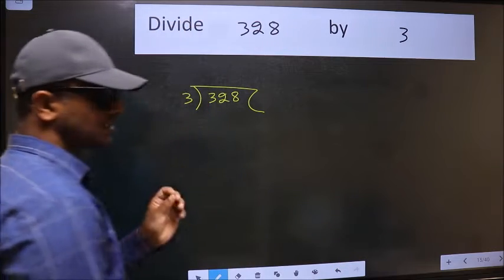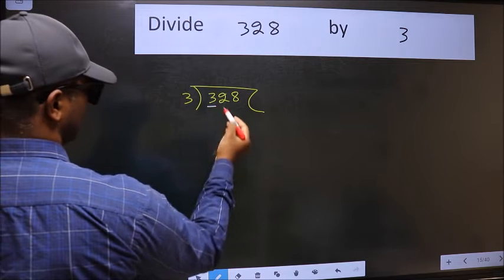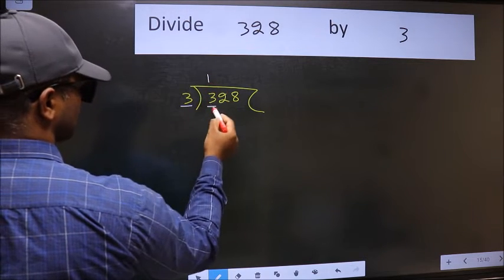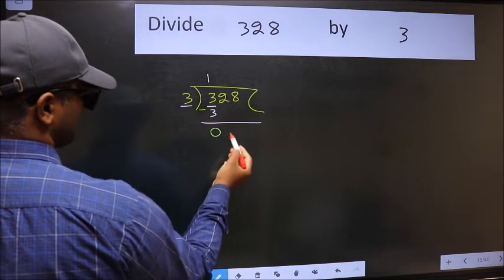This is your step 1. Next, here we have 3, here also 3. When do we get 3 in the 3 table? 3 times 1 is 3. Now we should subtract. We get 0.